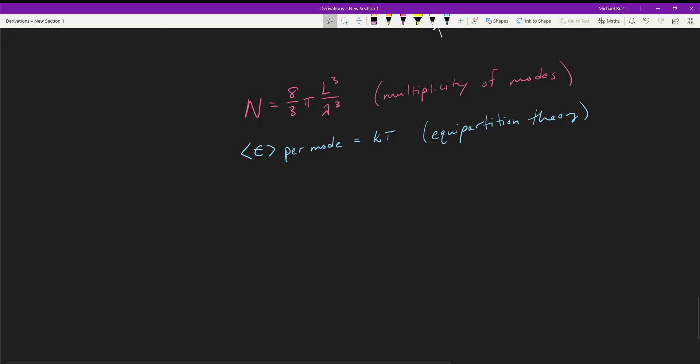Hey again everyone, today we're going to put everything together from the last few videos to get the classical result of the blackbody radiation problem, which is the ultraviolet catastrophe as it's called. The law itself that we're going to be deriving is the Rayleigh-Jeans law.